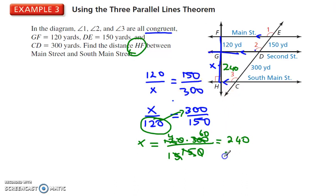So, we have to add the 120, and therefore we have 360, and that is in yards. The distance from Main Street to South Main Street is 360 yards.